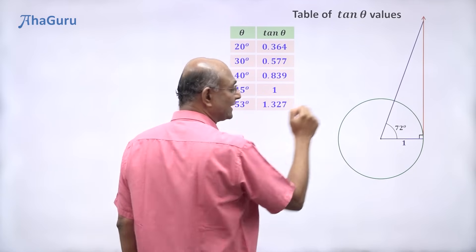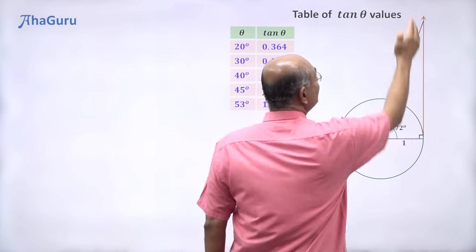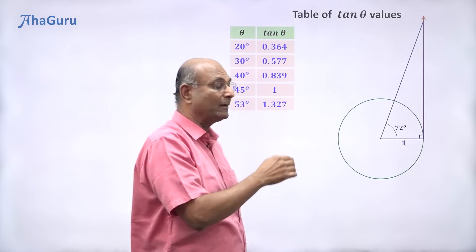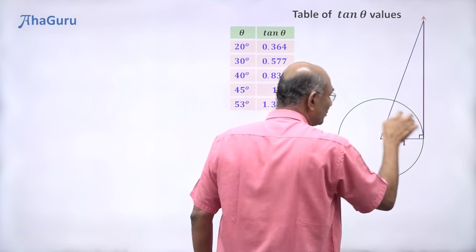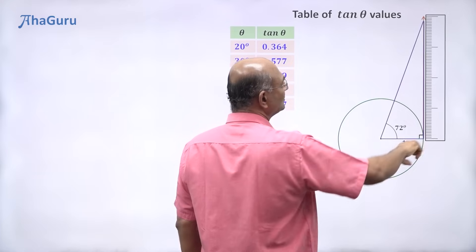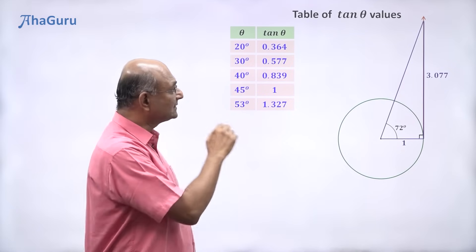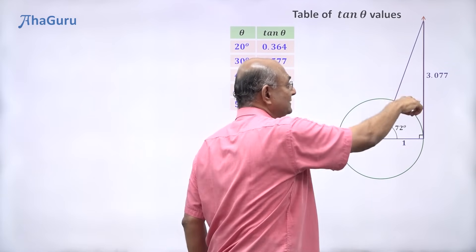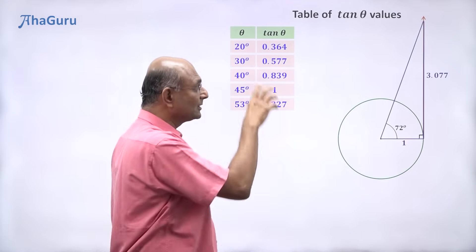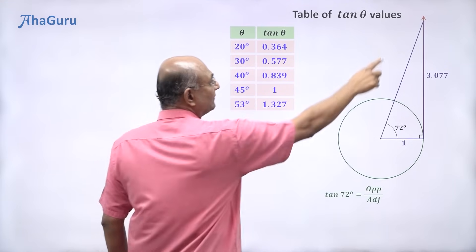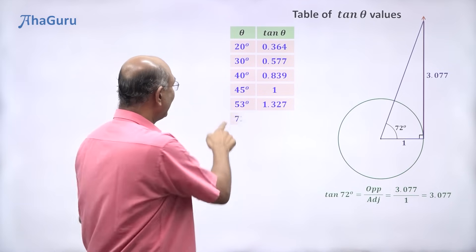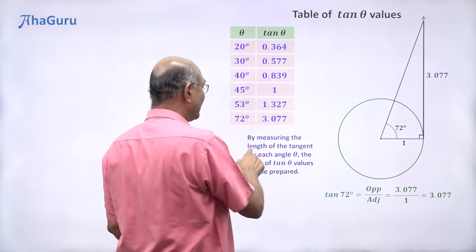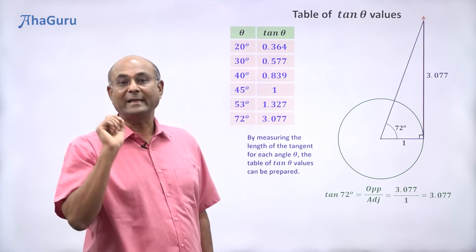As the angle keeps increasing, this length is going to become longer and longer. For 72 degrees, I measure this length using a scale and it turns out to be 3.077. So tan of 72 degrees is 3.077 by 1, therefore tan 72 degrees is 3.077. You can do this for every angle — take any angle, see where it intersects the tangent, draw the line, use a scale to measure the length, and use this calculation to figure out tan of that angle.